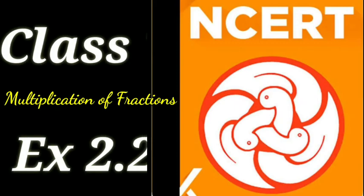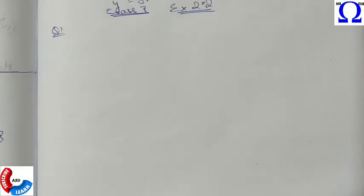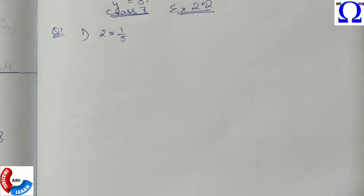Hello students, now let us start our next exercise, that is 2.2 Class 7 NCERT. In the first question, we need to match the following numbers with the drawings. So first one is 2 into 1 by 5.